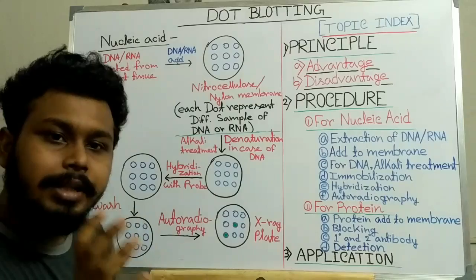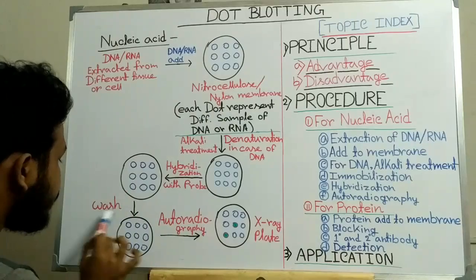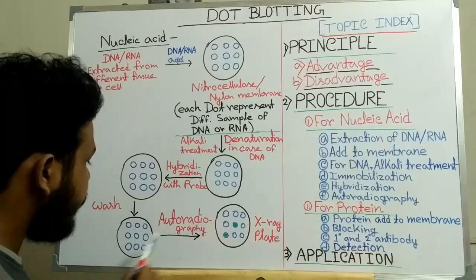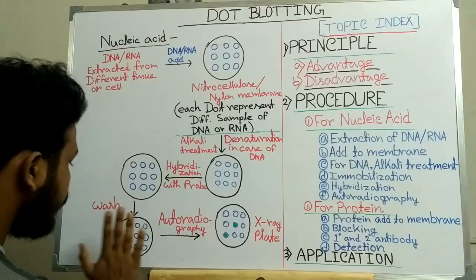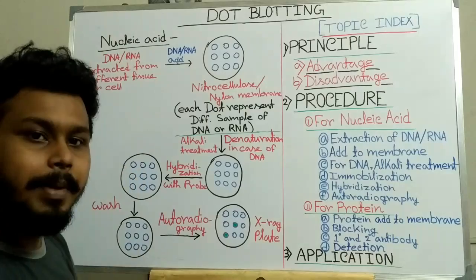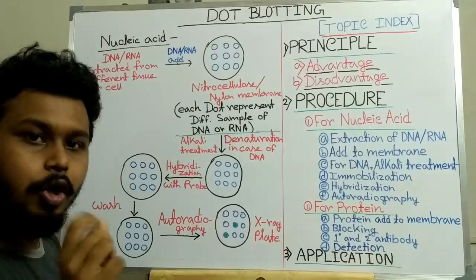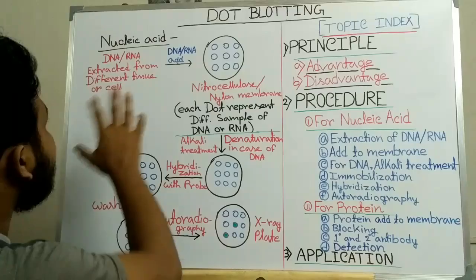Then hybridization is done by adding a radioactive probe, which can specifically bind to the DNA or RNA sequence. We then wash the unbound radioactive probe, and perform autoradiography by placing an X-ray plate on the nitrocellulose membrane. The radioactive isotope gives a spot on the X-ray plate, and we can interpret the presence of the specific DNA sequence in those dots.